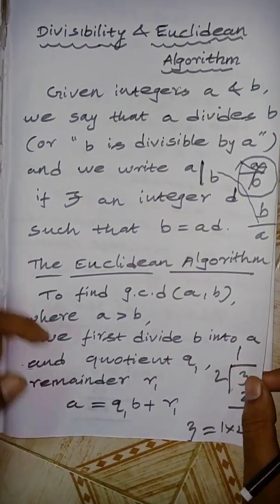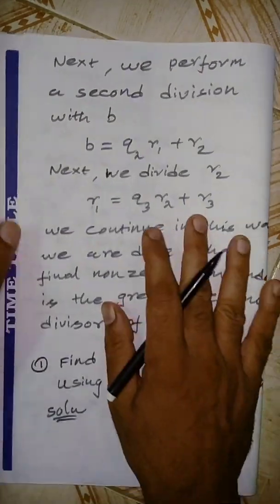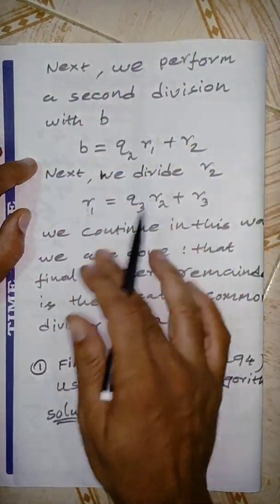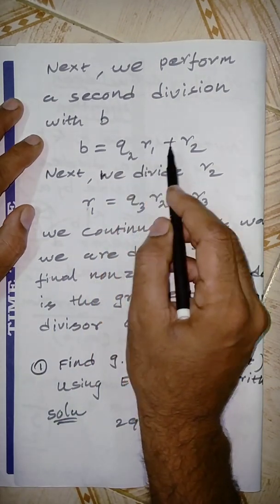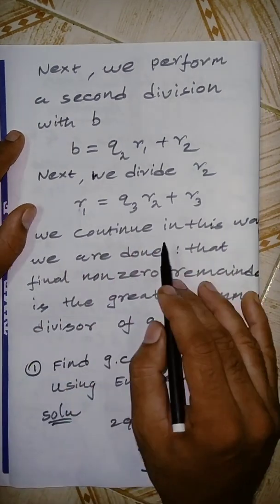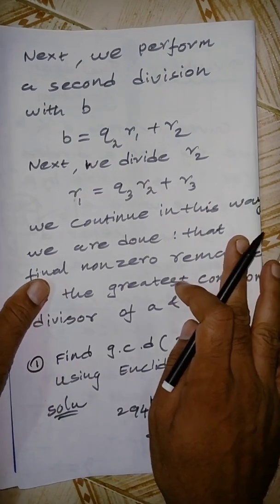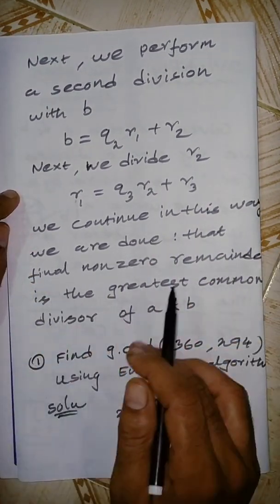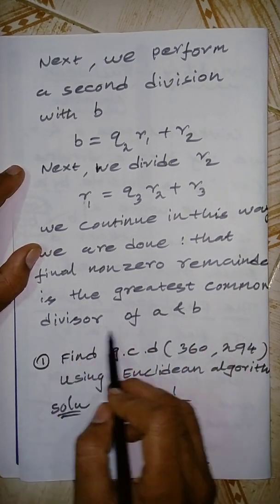Next we perform the second division: B = Q2·R1 + R2. Then we divide R1 by R2, and we continue in this way. The final non-zero remainder is the Greatest Common Divisor of A and B.